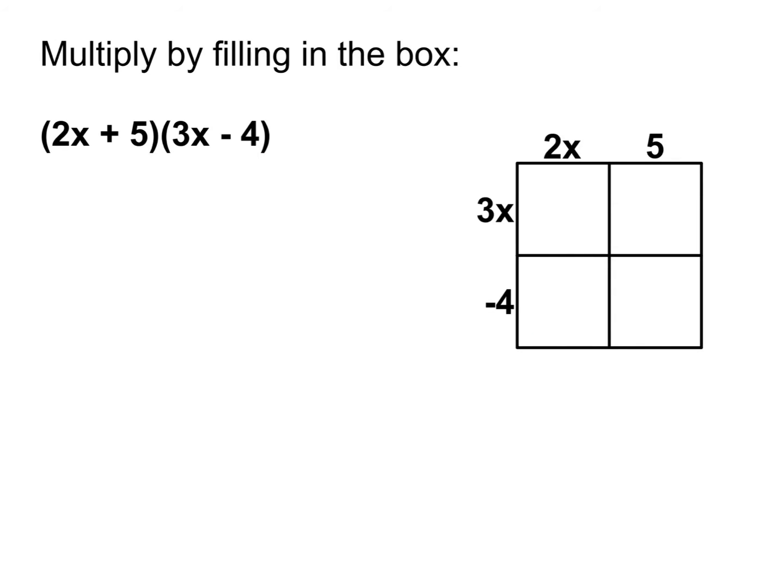In order to fill it in, I'm going to fill in each square with the product of the column and the row headers for that particular cell. For instance, in this top left one I'm going to do 2x times 3x, which is 6x squared. Then for the next one over, I'm going to do 5 times 3x, which is 15x.